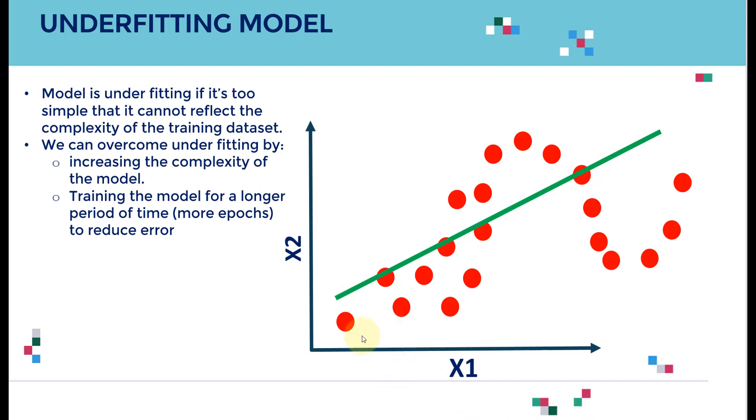These red dots are coming from the training data. Let's assume I'm a beginner in machine learning and I said, let's go ahead and train a linear regression model—that green line—to try to fit this data.